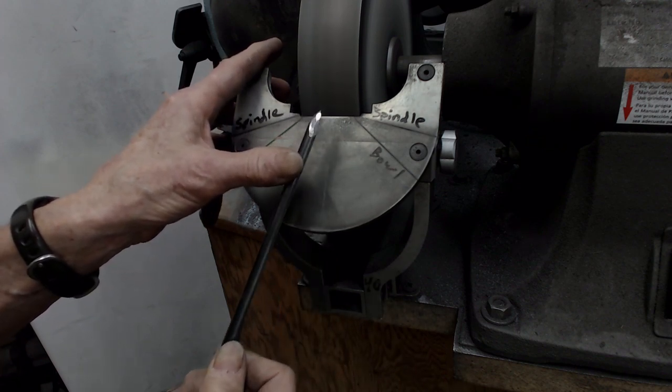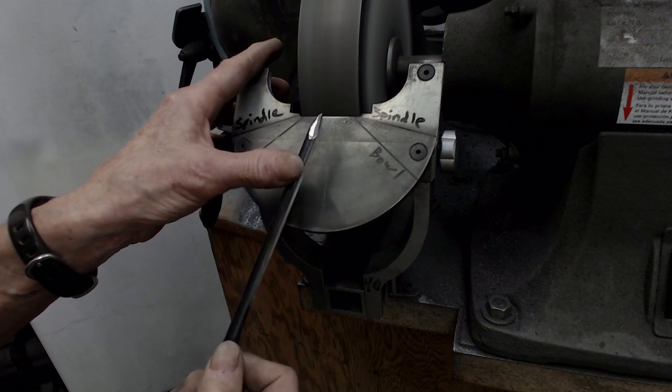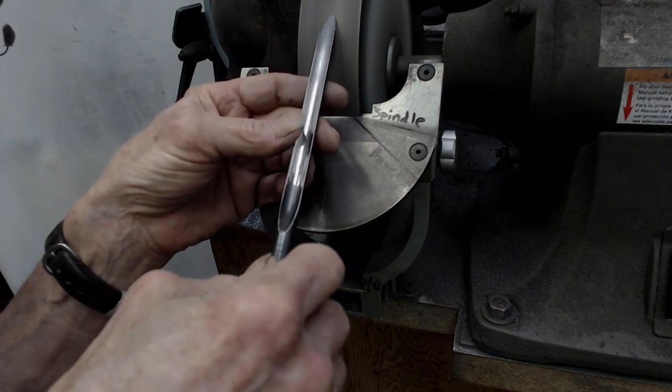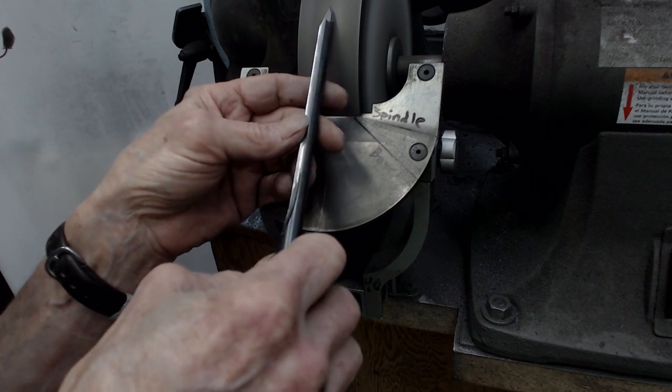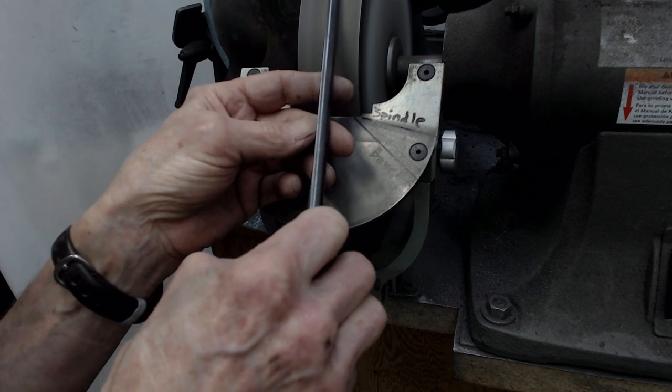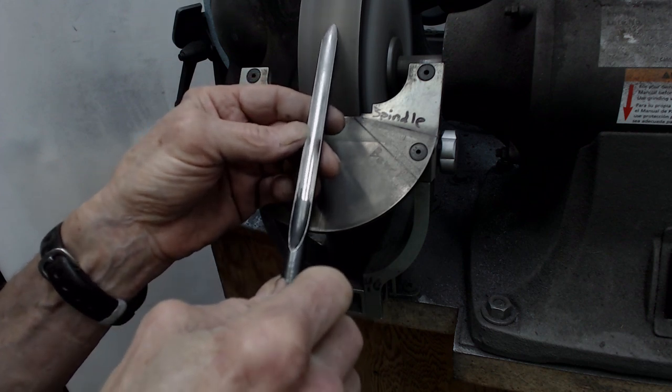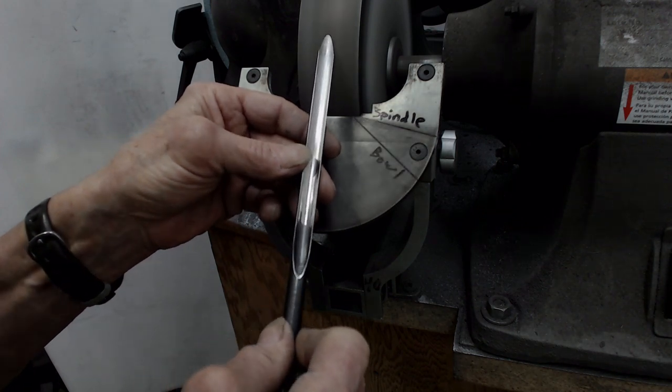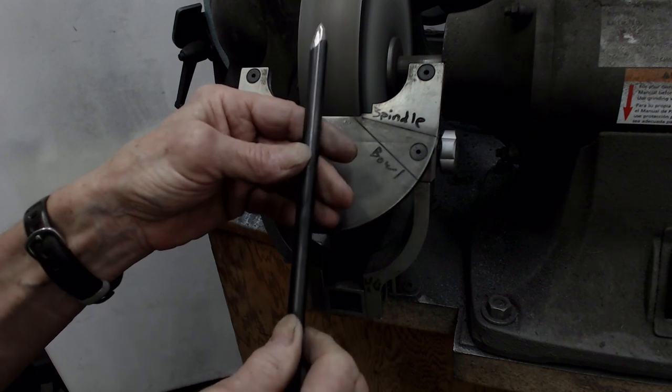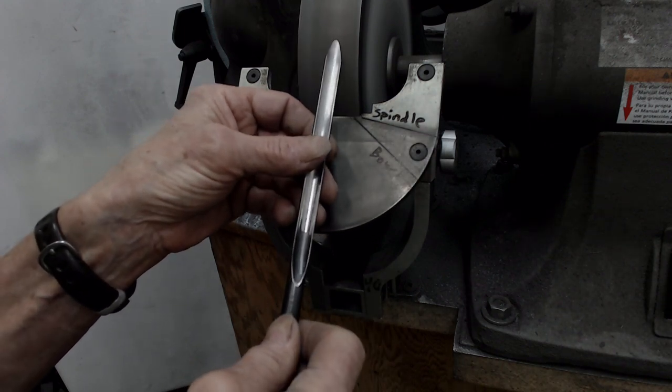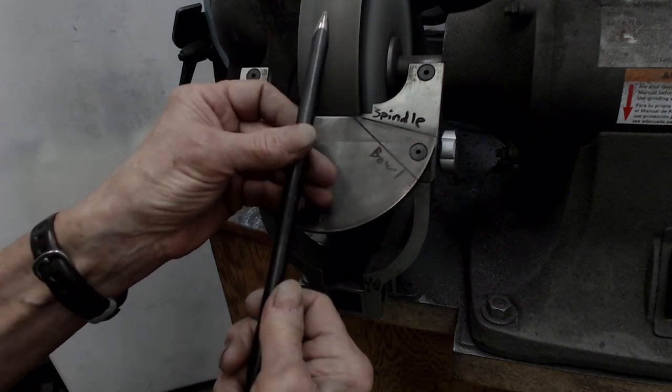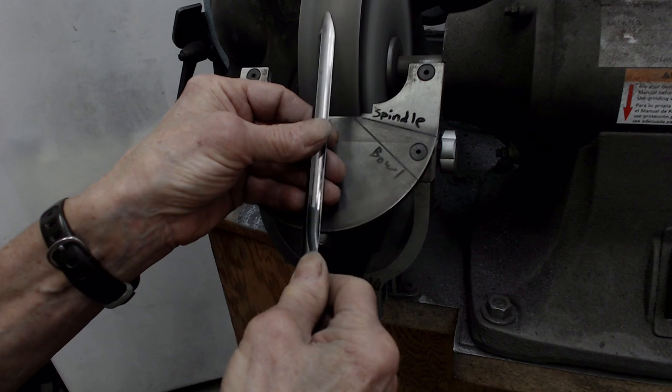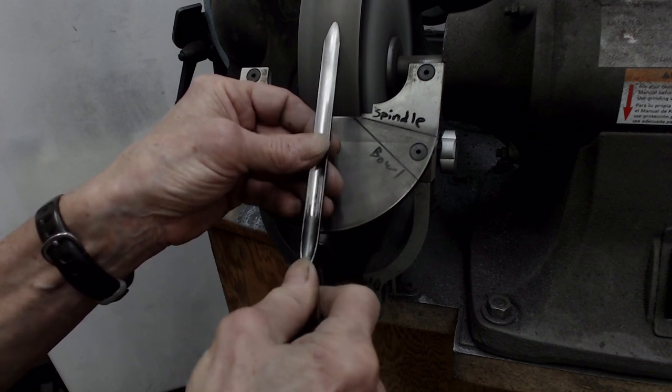Now I would like to reduce the cutting bevel and I'm going to do that freehand. What I'm doing is watching the side so that I can see. Now I'm also going to smooth that heel grind, just freehand on the wheel.